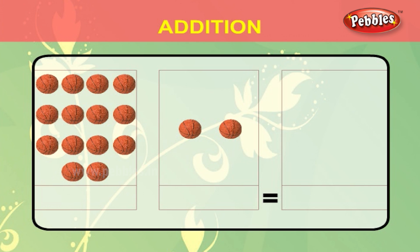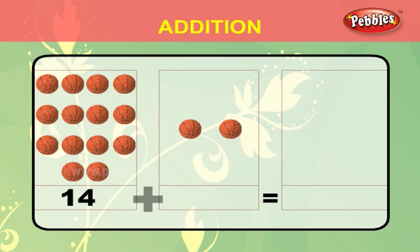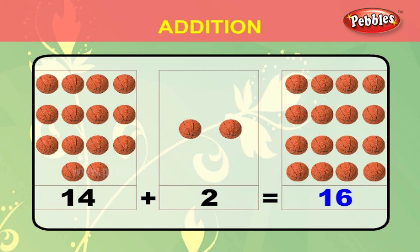Here we have 14 balls and in the second box we have 1, 2 balls. 14 plus 2 is equal to 16.